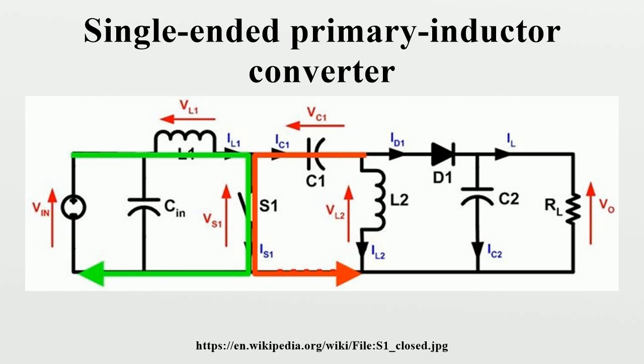Looking at average voltages, the following can be written. Because the average voltage of VC1 is equal to VIN, VL1 equals minus VL2.